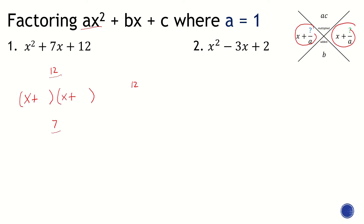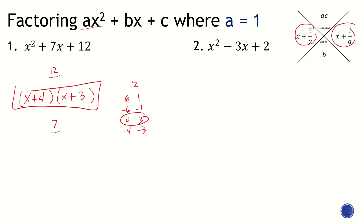Which pair gives us a sum of 7? 4 and 3. So the answer is X plus 4, times X plus 3.